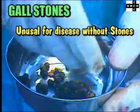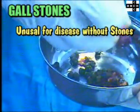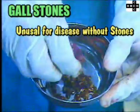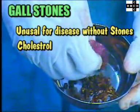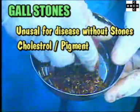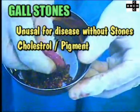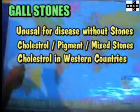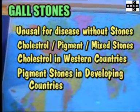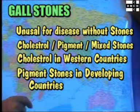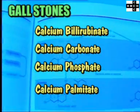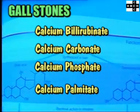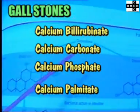Gallstones. Gallstone formation is the most common disorder of the biliary tree, and it is unusual for the gallbladder to be diseased in the absence of gallstones. Gallstones are classified into cholesterol or pigment stones; however, the majority are of mixed composition. Cholesterol stones are most commonly seen in western countries, whereas pigment stones are more frequent in developing countries. The gallstones contain varying degrees of calcium salts like calcium bilirubinate, calcium carbonate, calcium phosphate, and palmitate, that are radiopaque.